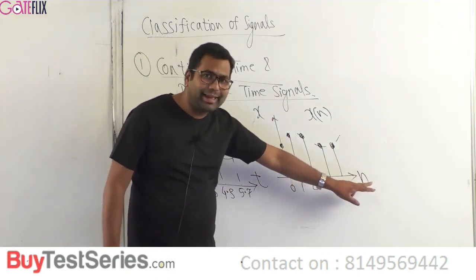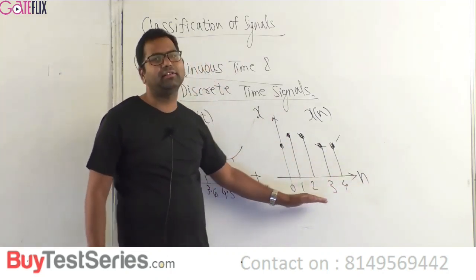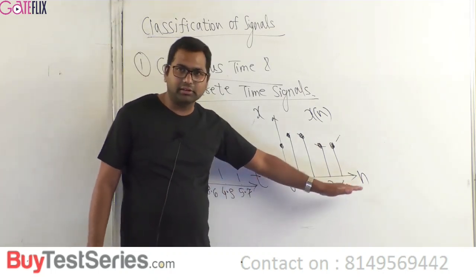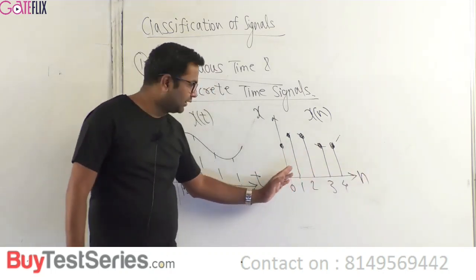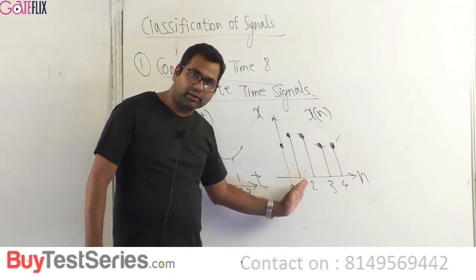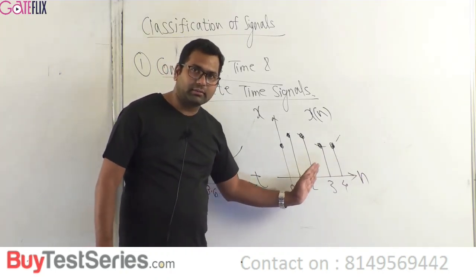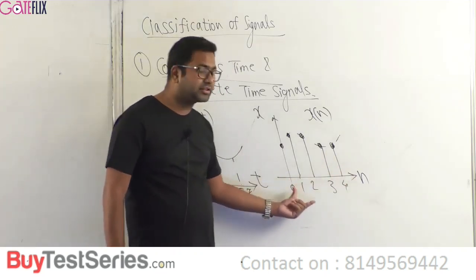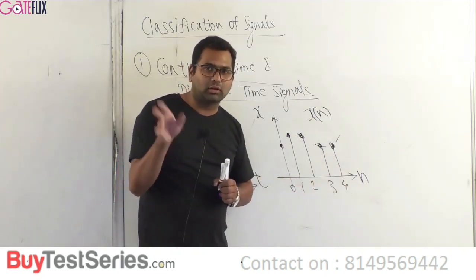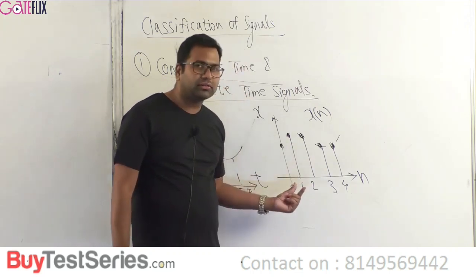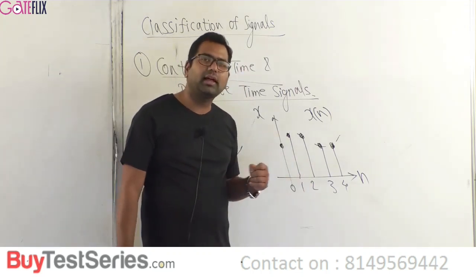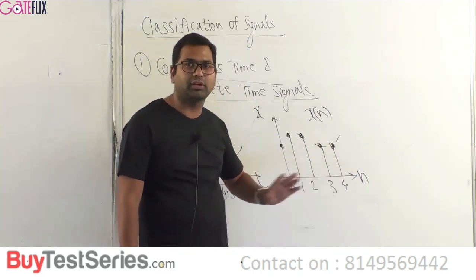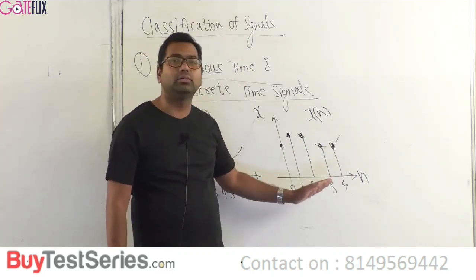In a discrete time signal, time n cannot take any value; it can take only integer values. That is, if time is 0, the next value will be 1, then 2, then 3, then 4. Fraction values are not possible — time cannot be 1.2, 2.9, 3.3, 4.7, or 9.9. Time can take only integer values.